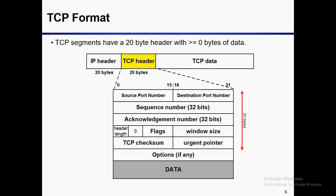Now let's talk about TCP format. We have a TCP header which contains: source port number, destination port number, sequence number (32 bits), acknowledgement number (32 bits), header length, flags, window size, TCP checksum, urgent pointer, options, and finally data.